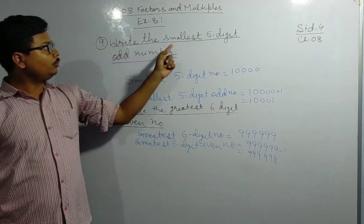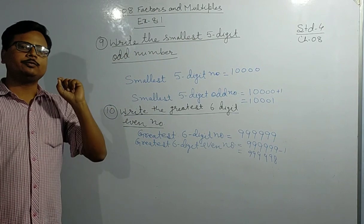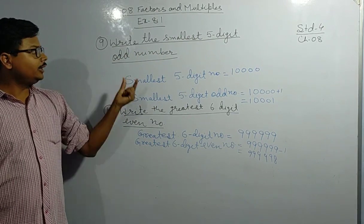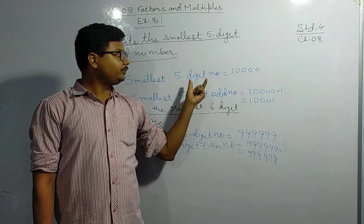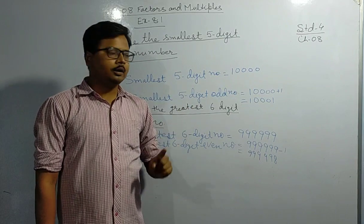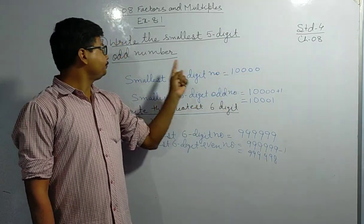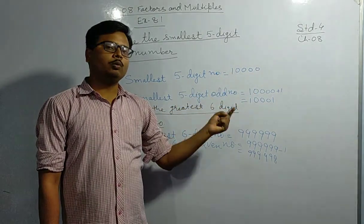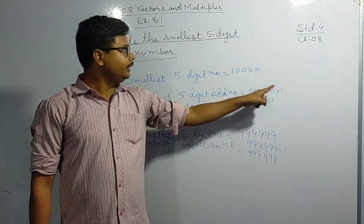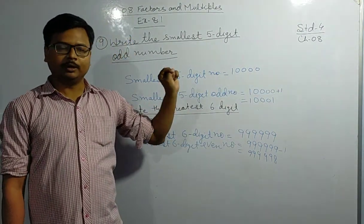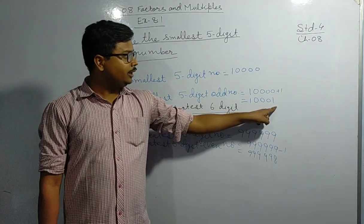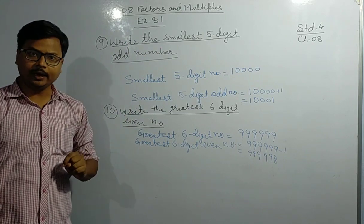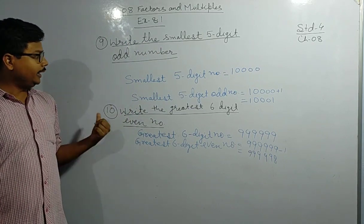Question number nine: write the smallest five-digit odd number. First, the smallest five-digit number is 10,000. But 10,000 is an even number, so to make it odd we add one, giving us 10,001. Therefore, 10,001 is the smallest five-digit odd number.